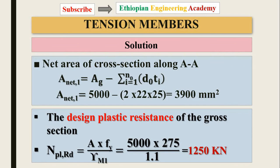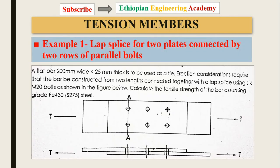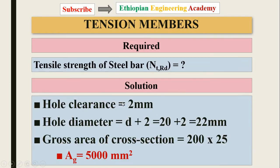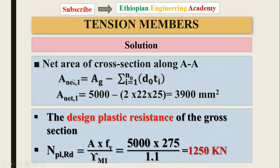To find the net area of the cross section we look at the figure to identify the critical line. Net area 1 equals the gross area minus the summation of hole diameter times thickness. In that row there are two holes, so: Net area 1 = 5000 − 2 × 22 × 25 = 3900 mm². This is the net area along line A-B.